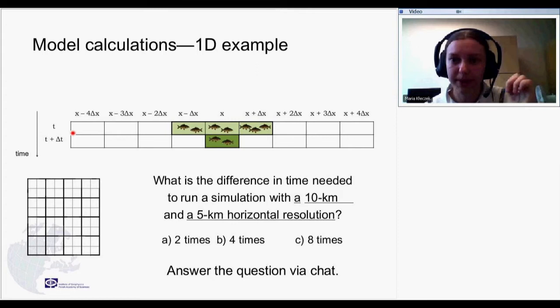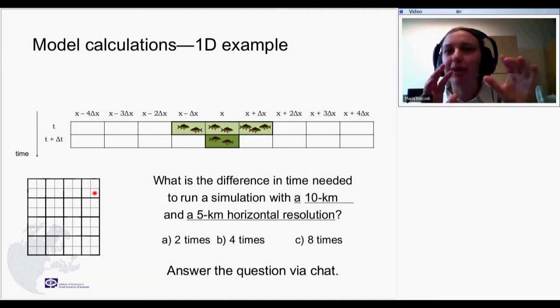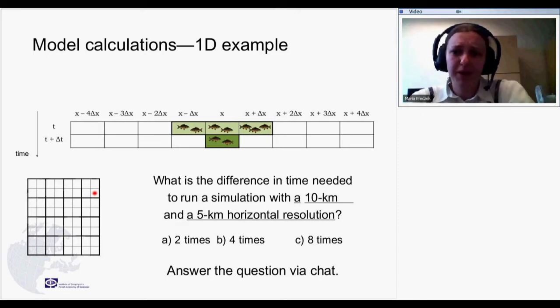Also diminish it twice, which means that if the grid gets two times denser, you in fact need eight times more time to run the simulation. And this applies to any numerical simulation. This is something that I would like you to remember from this lesson. I don't know how many of you may deal in the future with atmospheric modeling. Maybe some will, but probably not many of you. But with any modeling you may deal, this rule applies to any numerical simulation.